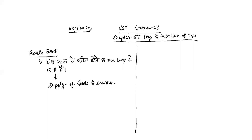If you fall under supply as defined under Section 7, then you have made a supply, you have triggered the taxable event, and therefore tax will be imposed on you — tax will be levied.